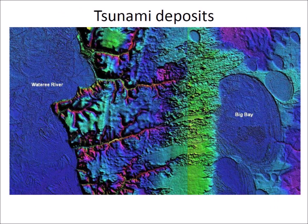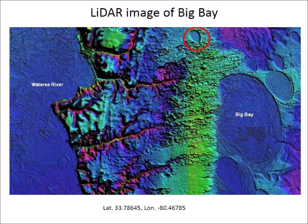Impacts on rivers created tsunamis that put sandy debris on bays that had just formed. In 2010, Brooks, Taylor, and Ivester described Big Bay as being covered by an aeolian sand sheet, but noticed that the small bay at the top of the image, circled in red, is not covered by the sand sheet. What could have prevented the wind from depositing sand on the small bay? The geological law of superposition offers an explanation which indicates that Big Bay formed first. The bay was then covered by a sand sheet deposited by a tsunami from an impact on the watery river, and finally a small bay formed on top of the sand sheet.